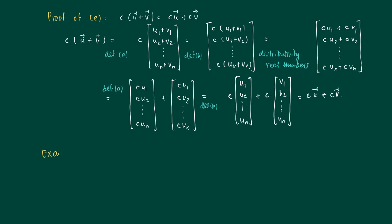For example, simplify the following expression: 2 times the vector a plus 3b minus 2a minus 4b.